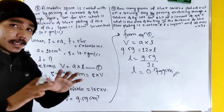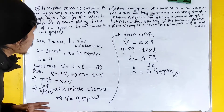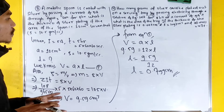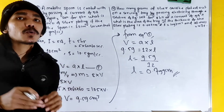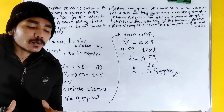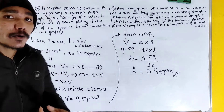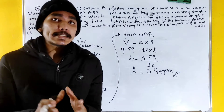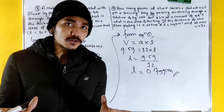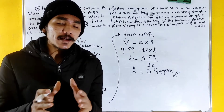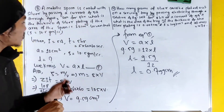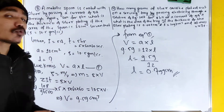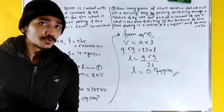This is a good question. You can see that the spoon is coated, and you can use this formula to solve it. The equivalent weight divided by Faraday is used in the formula.